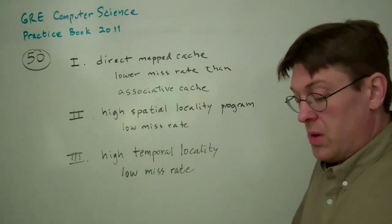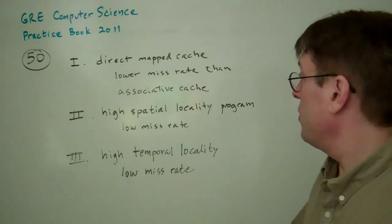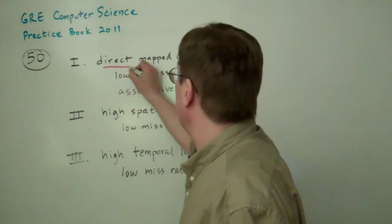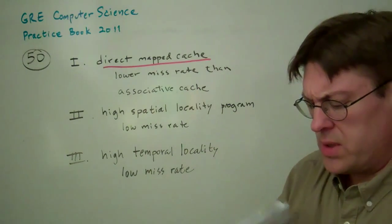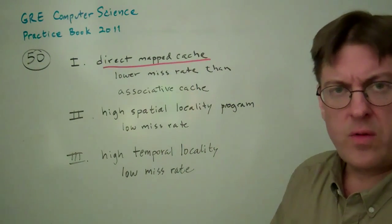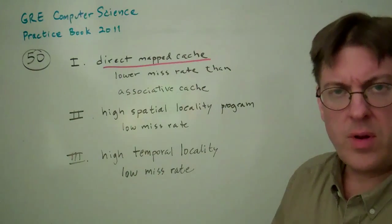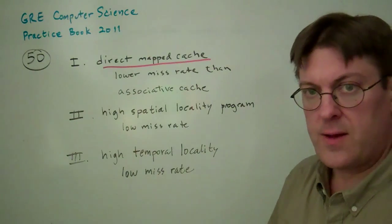Well, we have to definitely understand terms. Direct mapped cache, which I think we talked about in problem 27, that's where the address and main memory addresses to a specific spot in the cache. So there's no choices there.